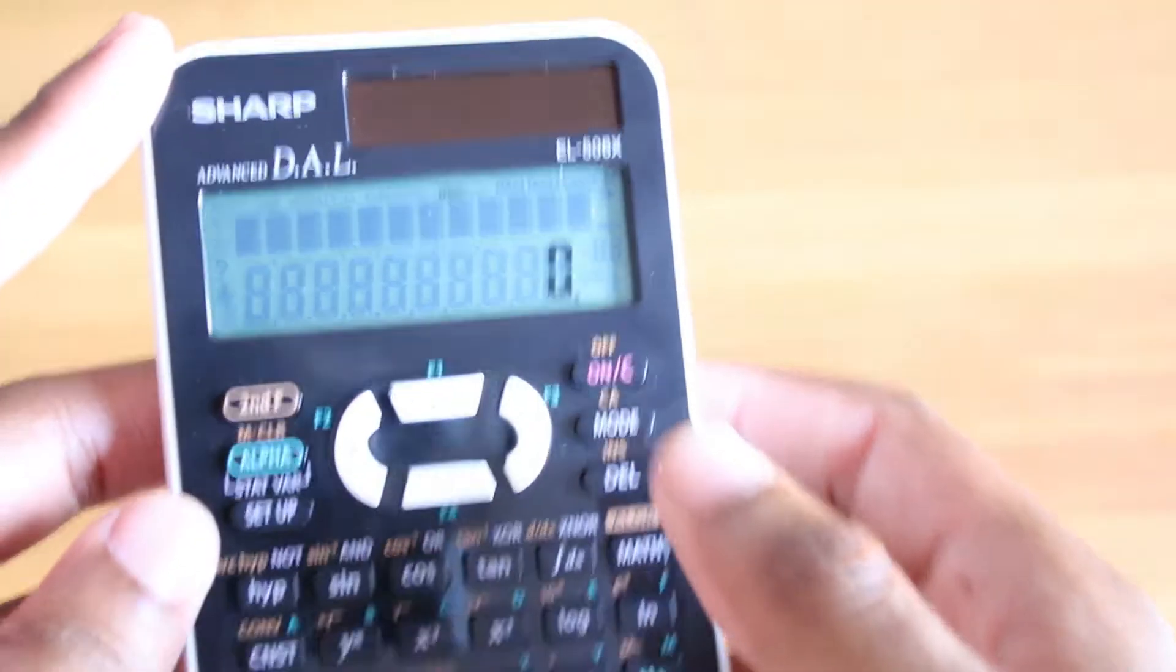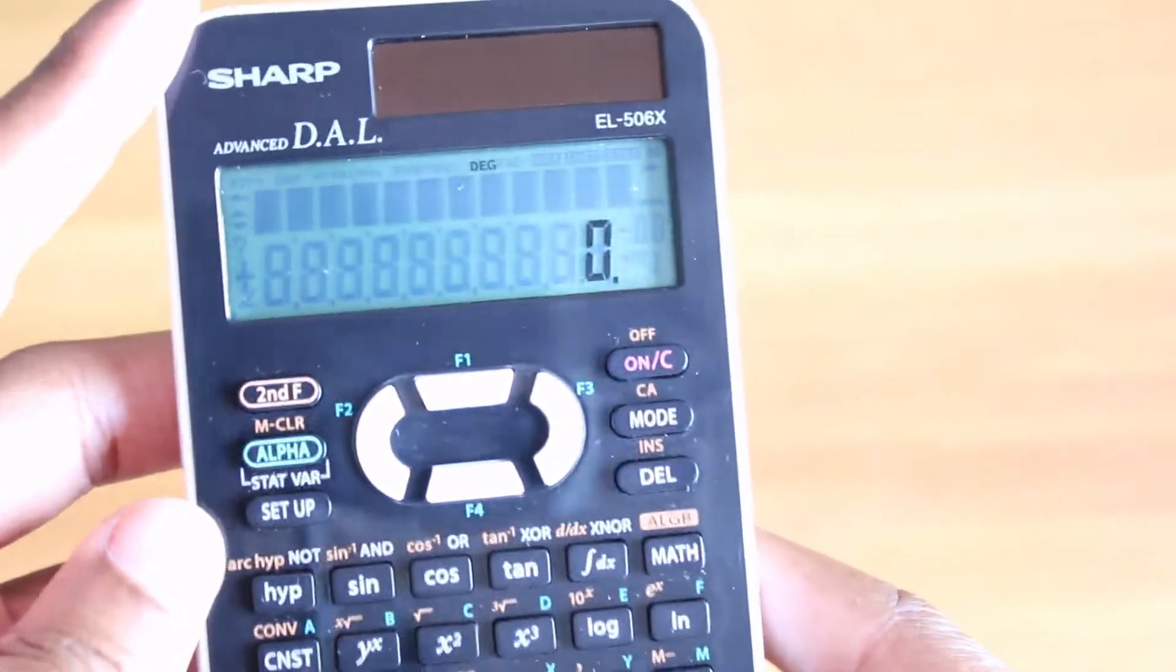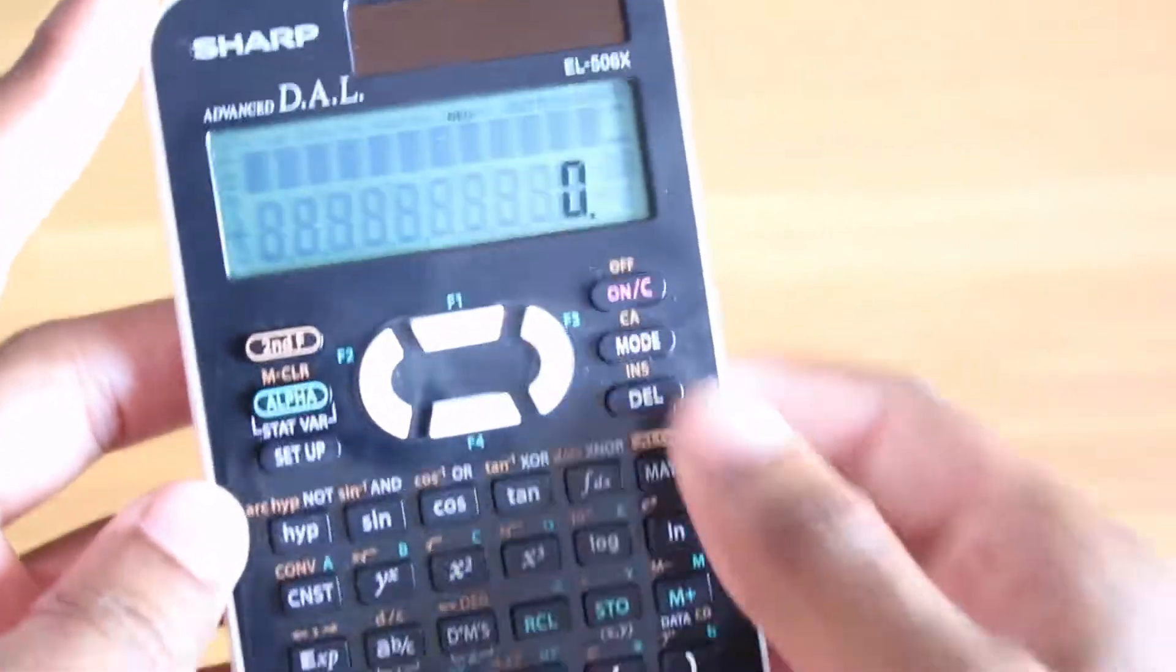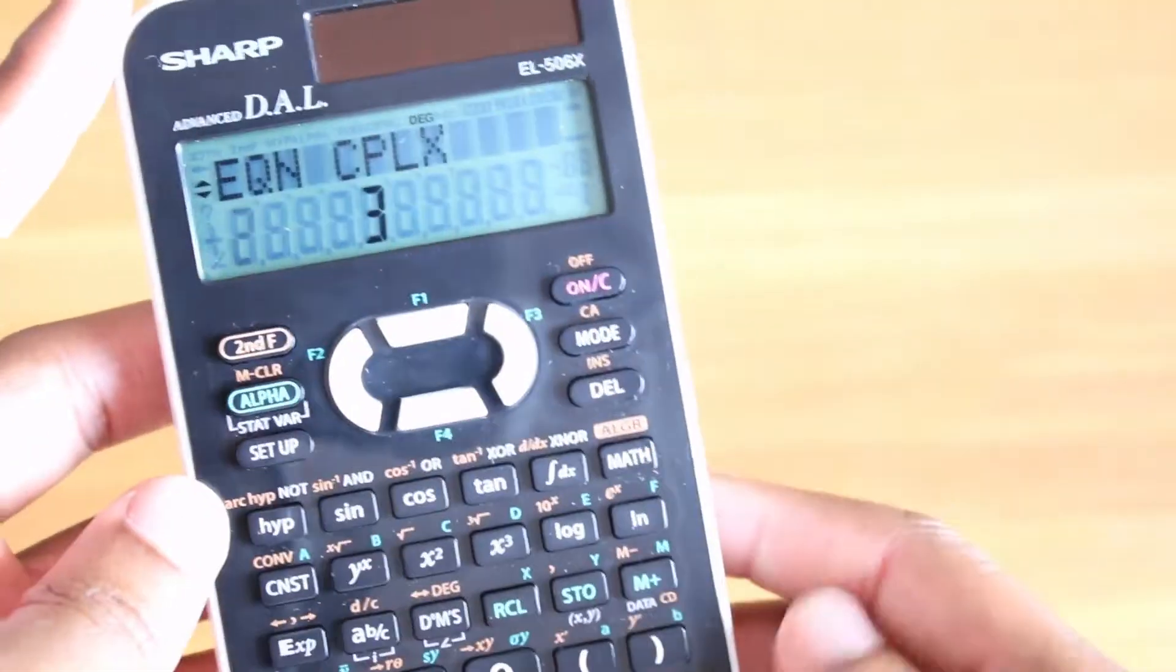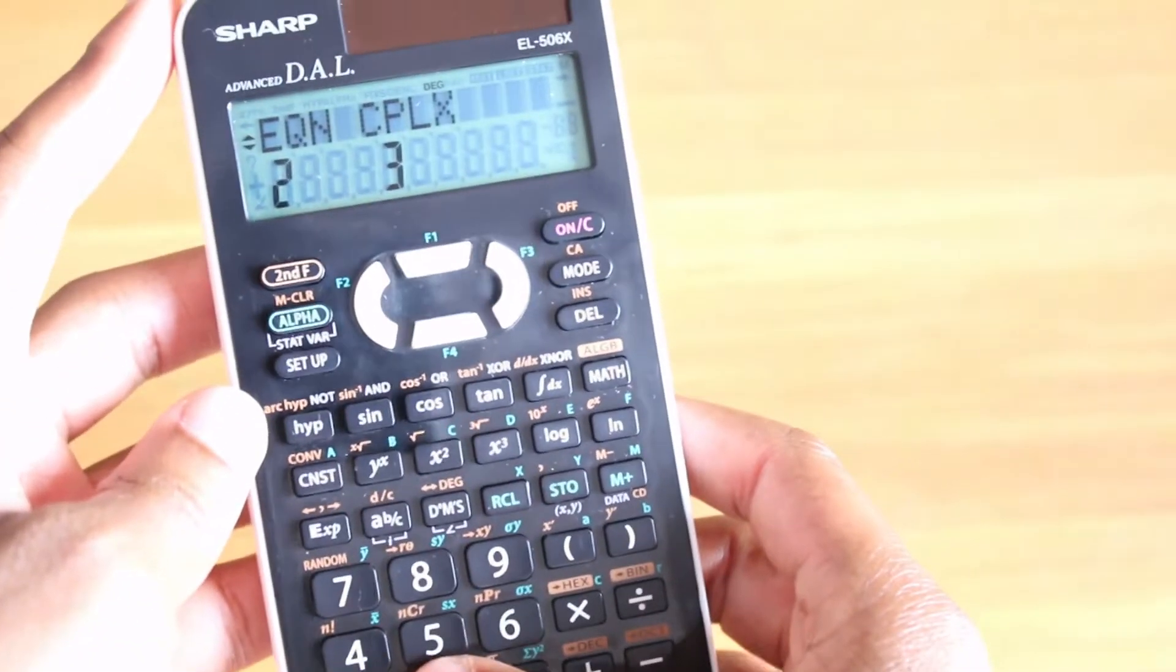Alright, so I hinted before that you can use your calculator to solve simultaneous equations. This is how you do that. You need to go into mode, press down, we're switching for equations again, press 2 for equation.